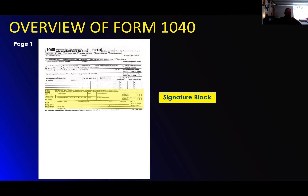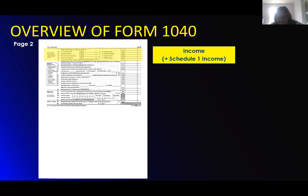The signature block — this used to be on the end of the second page, now it's right there on the first page. This is where they sign it and you have your PIN numbers if you need them. Make sure that they sign it. It's actually digital for us on the electronic ones, but on the new forms it's right there on the first page. It's a little weird seeing it right there at the beginning.